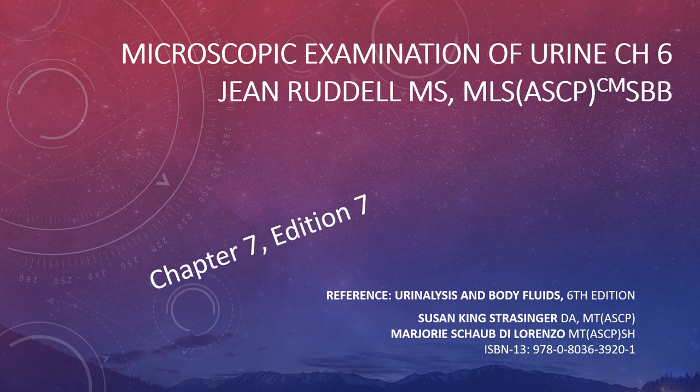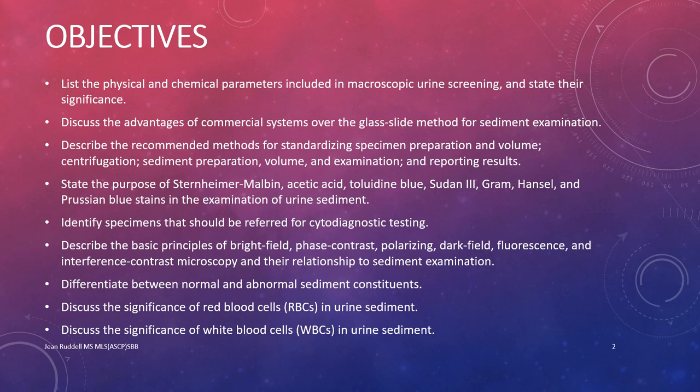A urinalysis has three parts. The third part of the routine urinalysis, after physical and chemical examination, is the microscopic examination of urinary sediment. Objectives include: list the physical and chemical parameters included in macroscopic urine screening and state their significance; discuss the advantages of commercial systems over the glass slide method for sediment examination; and identify specimens that should be referred for cytodiagnostic testing.